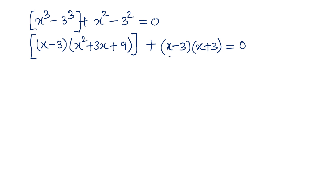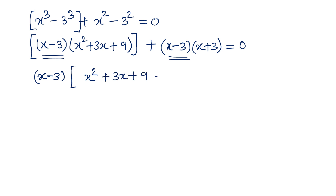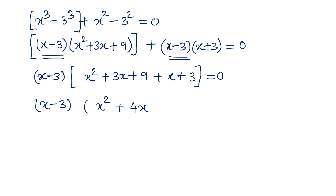As we can see, the (x - 3) term appears in both parts. Taking (x - 3) as a common factor, what remains is x² + 3x + 9 + x + 3 = 0, giving us (x - 3)(x² + 4x + 12) = 0, since 9 + 3 = 12 and 3x + x = 4x.